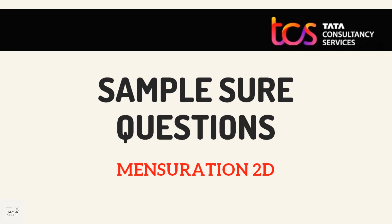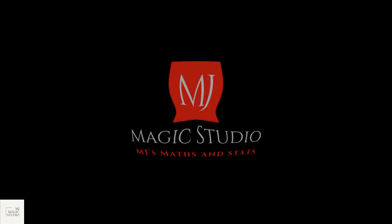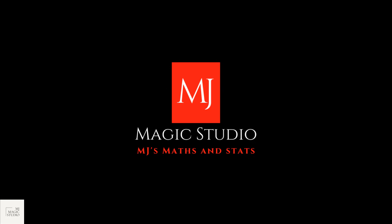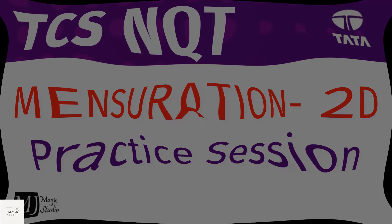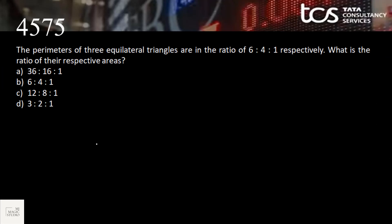Let's start. The perimeter of three equilateral triangles are in the ratio 6:4:1. What is the ratio of their respective areas? The key rule: for a given set of 2D figures, if their side ratio is known, then the area ratio is the duplicate ratio of their side ratio — that is, a² : b² : c².